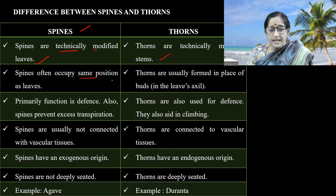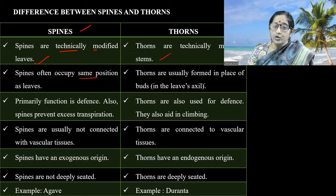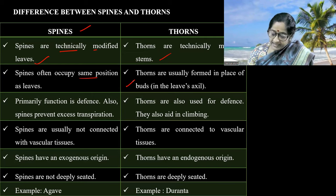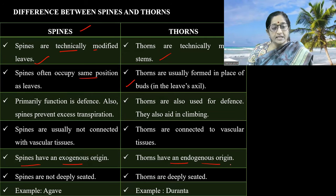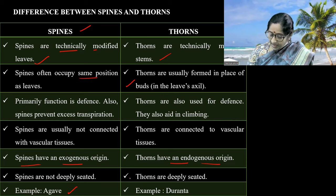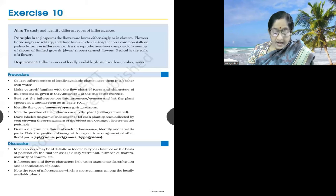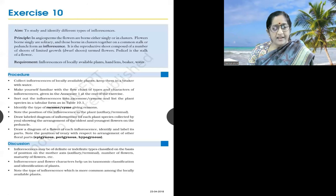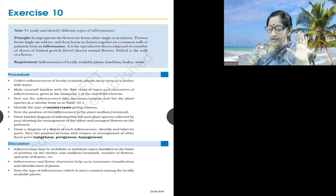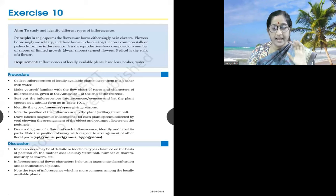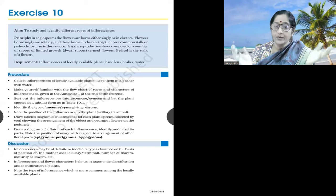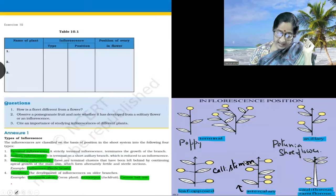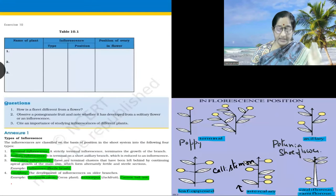Differences between spines and thorns: spines are technically modified leaves, and thorns are technically modified stems. Spines often occupy the same position as leaves. Thorns are usually formed in the place where axillary buds are present; thorns are endogenous in origin — examples: Agave and Duranta. The inflorescence is an extension area not commonly found in the NCERT textbook. Let us see the different types of inflorescence.